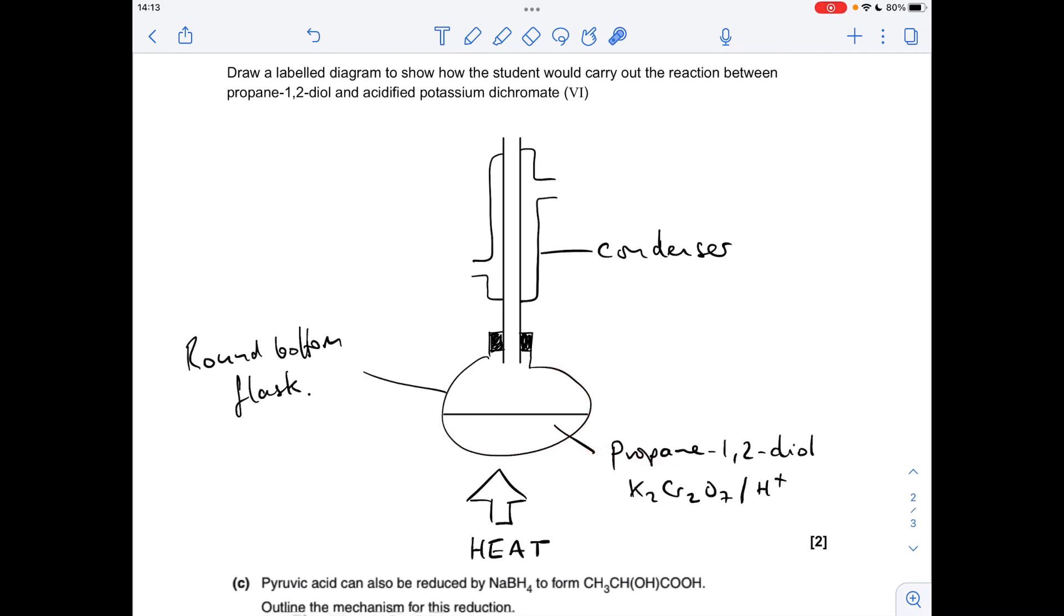Obviously the chemicals are inside. We've got a heat source and it's perfectly fine to just have an arrow pointing up with the word heat underneath. And we've got a condenser fitted to the flask.